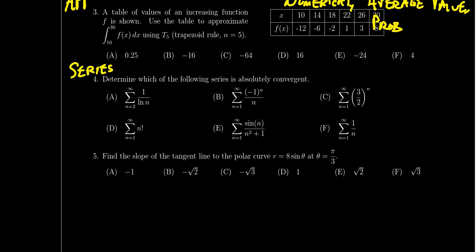The last question in the multiple choice section, question number five, will ask about polar coordinates and polar functions. On exam four we had three multiple choice questions about polar functions: one about recognizing polar graphs and polar coordinates, one about computing derivatives involving polar coordinates like finding the slope of a tangent line to a polar curve, and one about finding integrals of polar functions such as area of a polar region, area between two polar curves, or arc length of a polar curve. One of those questions will be grabbed for question five on the final exam.